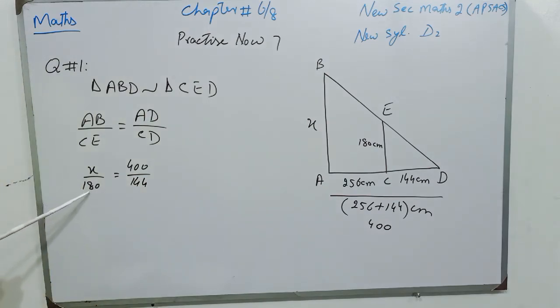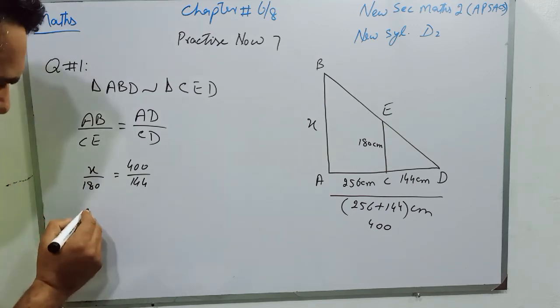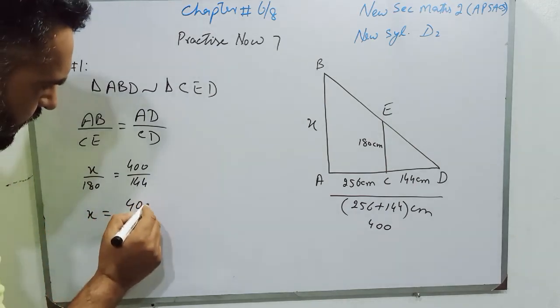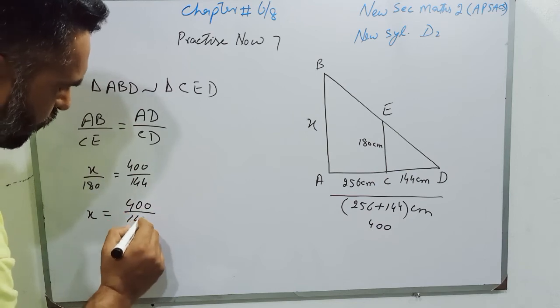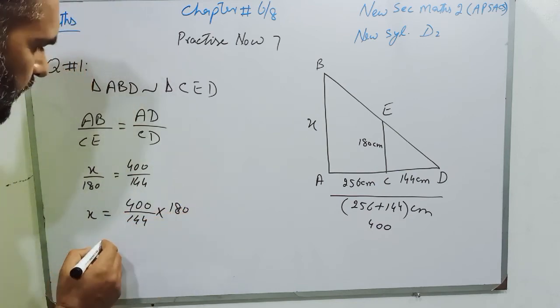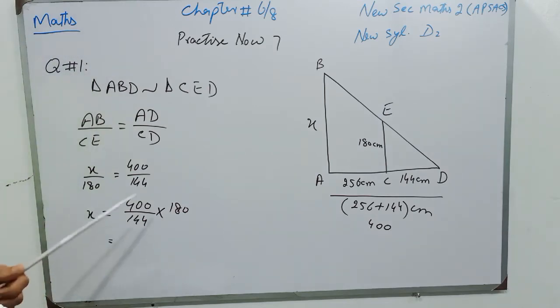180 is dividing on the left side. When we transfer it to the other side, it will multiply. So X will be 400 over 144, multiplied by 180. Now we can cancel numerator and denominator with the same table, or we can use a calculator to multiply numerator and then divide by denominator.